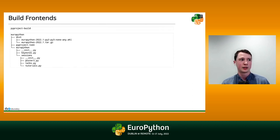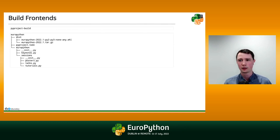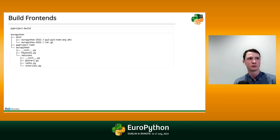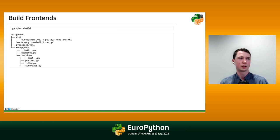We'll install build, and once it's in our local Python environment, it provides one command to call: pyproject-build. We call it with no options or arguments and it goes ahead and does its thing and reports success — it builds our project. So what did it actually do? In our project folder, we still have our package and our metadata, but it's added a new dist folder with two files inside of it.